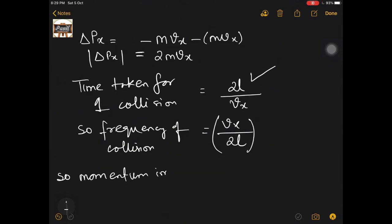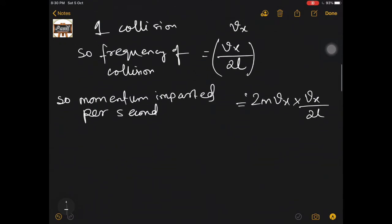The momentum imparted per second is going to be 2m·Vx times Vx/2L. So let us do some calculations here. I am getting Vx² times m/L. This is momentum imparted per second. Now, if you know Newton's second law, momentum imparted per second is nothing but the force exerted.